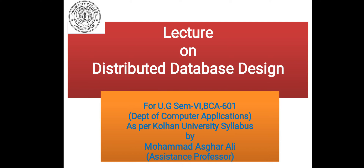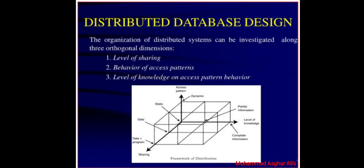Today I am going to start a new chapter on distributed database design. The design of a distributed computer system involves making decisions on the placement of data and programs across the sites of a computer network, as well as possibly designing the network itself. In the case of distributed DBMS, the distribution of application involves two things: the distribution of the DBMS software and the distribution of application programs that run on it.